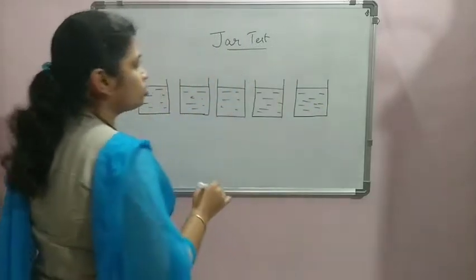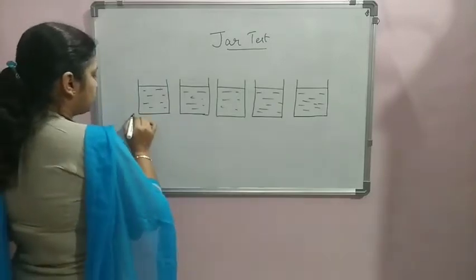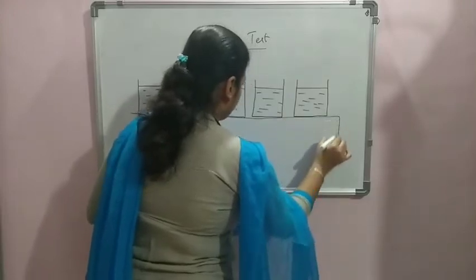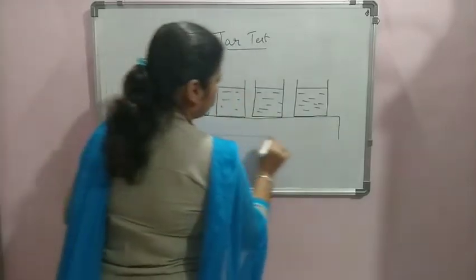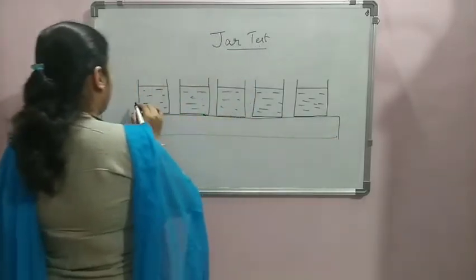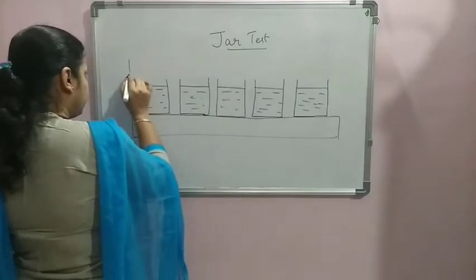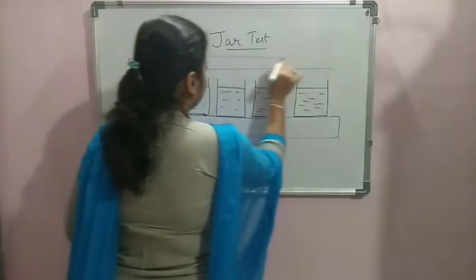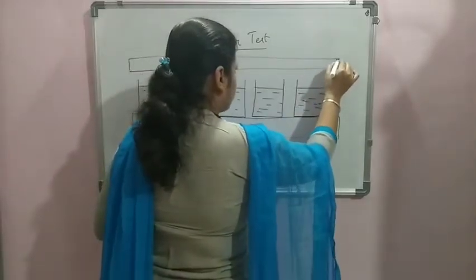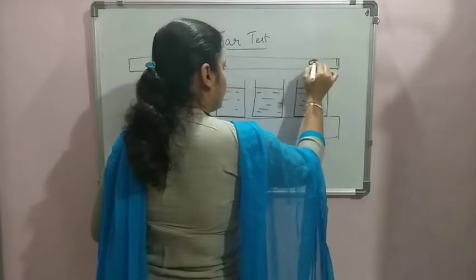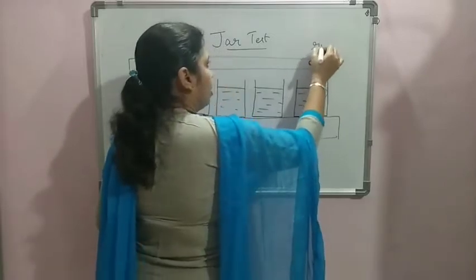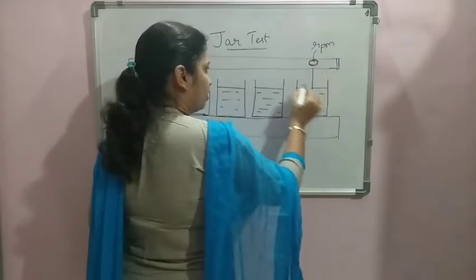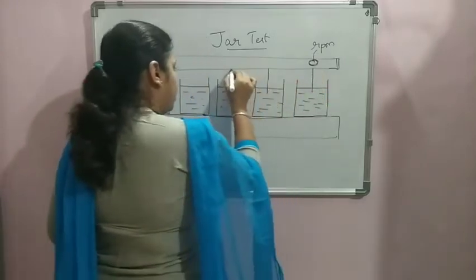These jars we are going to keep in a setup called jar test apparatus. We will be keeping it in an instrument which will be having all the setup made to control the rotation process, the rpm. Here it will be having the mechanism to control the rpm, the rotations.